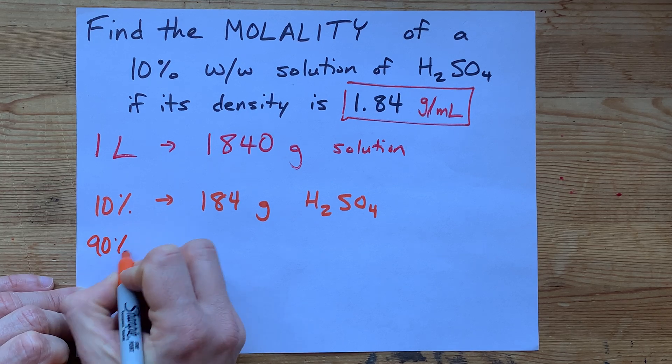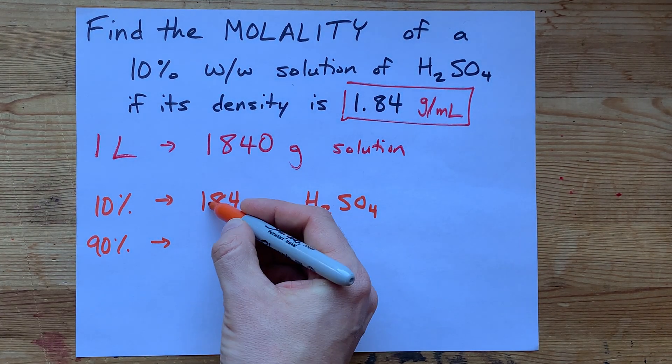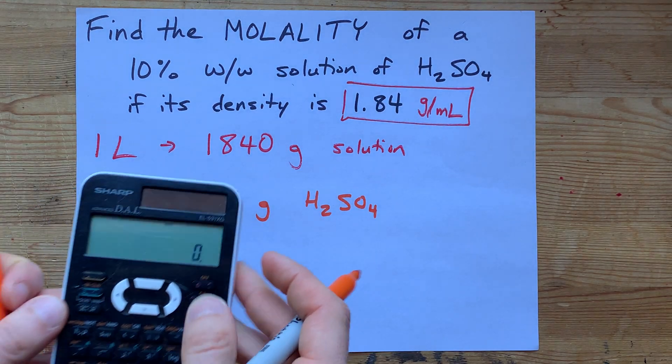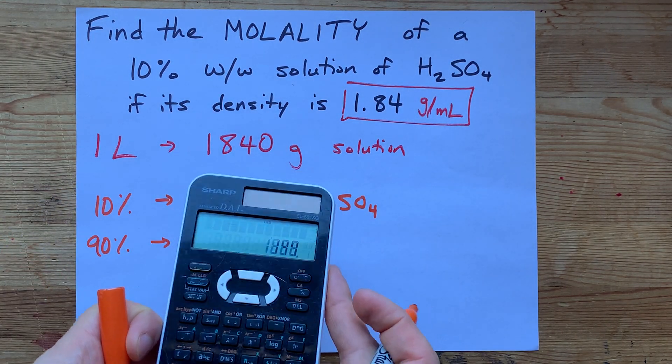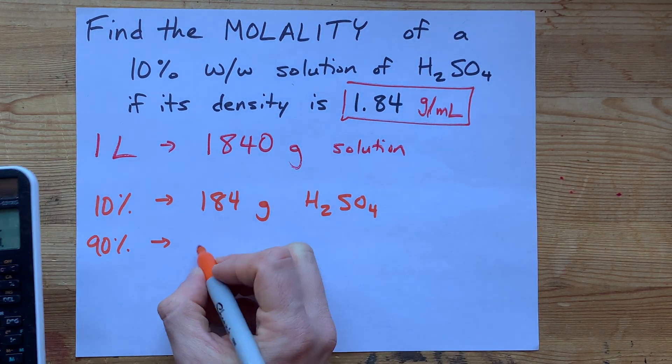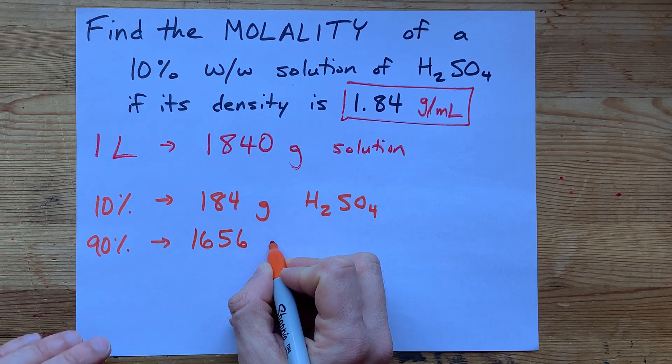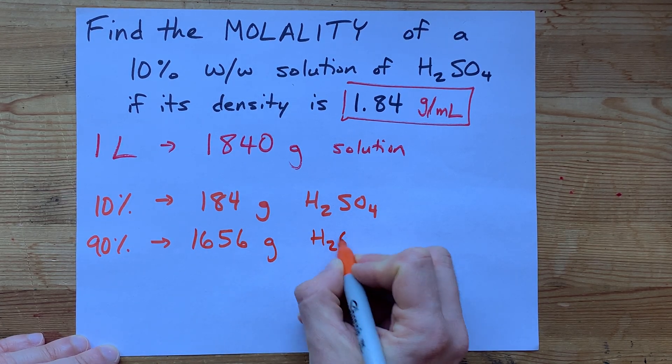And the rest of it, the 90%, is however much remains. 184 of the 1840 is water. 1840 minus 184 leaves me with 1656 or 1,656 grams of water.